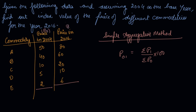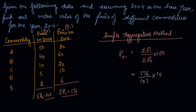Adding P0, the submission of base year prices, gives 107, and submission of P1, the current year prices, gives 176. So by solving this: 176 divided by 107 into 100 equals 164.49, which is your price index with the base year as 2004 and the current year as 2016.